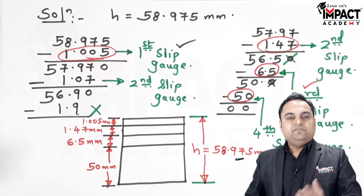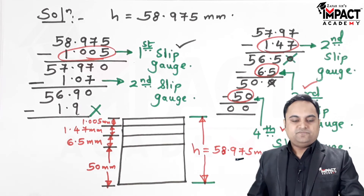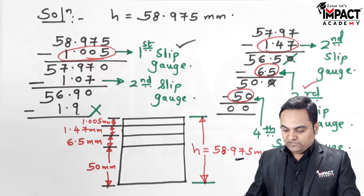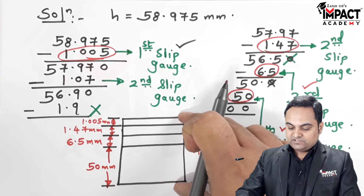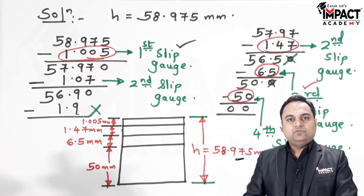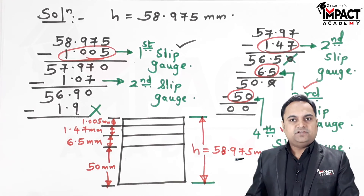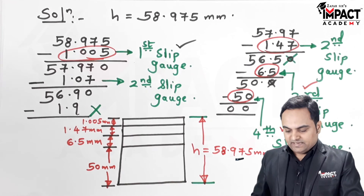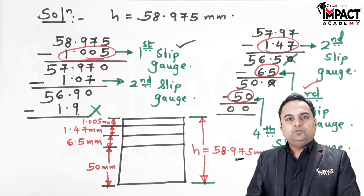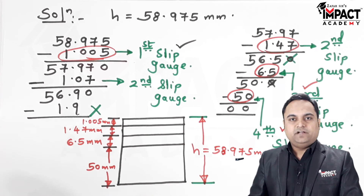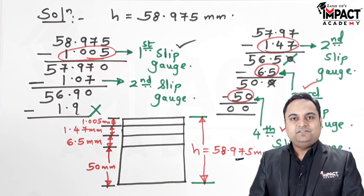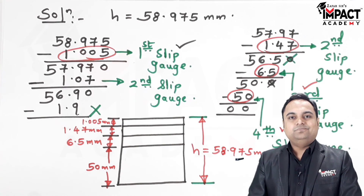We selected one slip gauge from each range to achieve the required height. Once the height is adjusted, the slip gauge assembly can be used in applications such as with a sine bar to measure a particular angle.